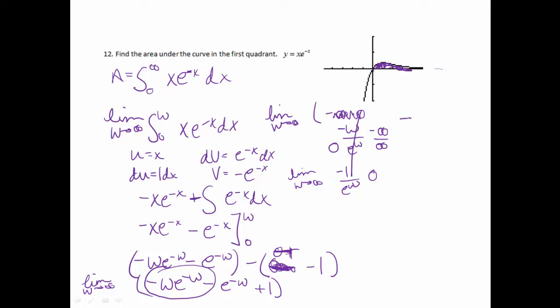And we still had minus e to the negative w, which I've done nothing with. If I plug infinity in here, e to the negative infinity will approach 0. So that one will just be minus 0. So this whole limit was just 0. So I ended up getting 0. Don't forget that we have this plus 1 hanging out here. So the 0 plus 1 will be 1. So the area under that curve is 1.